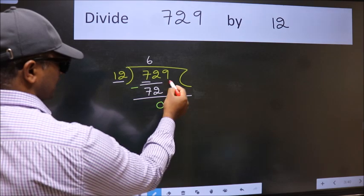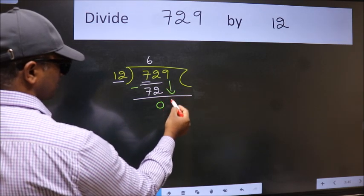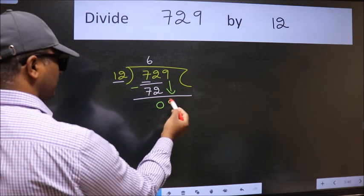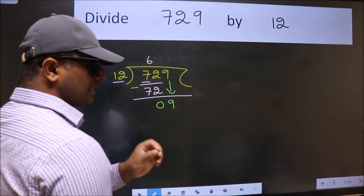After this, bring down the beside number. So 9 down. After this step, the mistake happens.